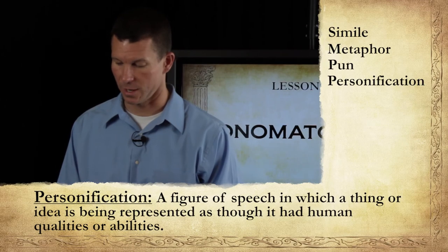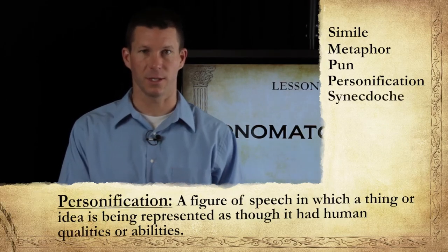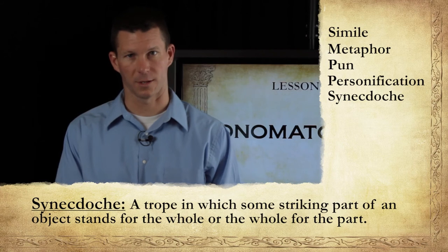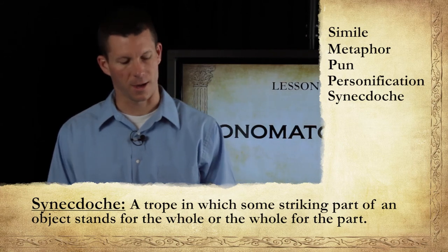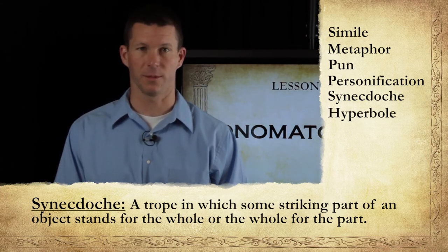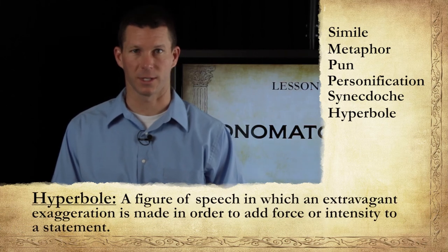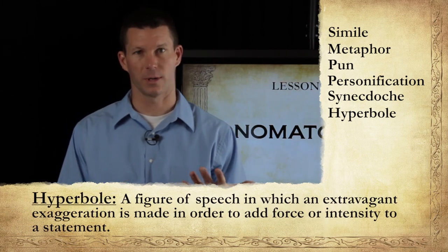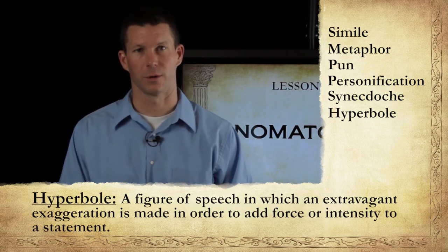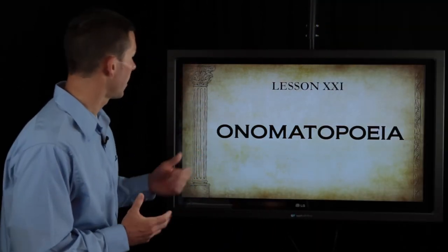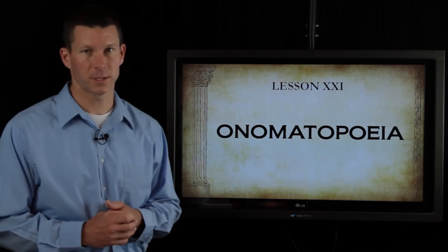After personification, we covered synecdoche, which is part for a whole — "all hands on deck." Then most recently we covered hyperbole, which is an extravagant exaggeration. So we're moving on to figure of speech number seven, and you can see it's a mouthful: it's onomatopoeia. The first thing we need to be able to do is say the word.